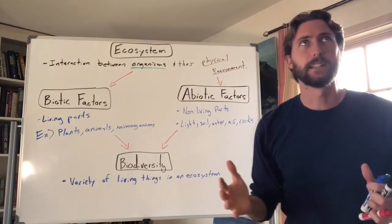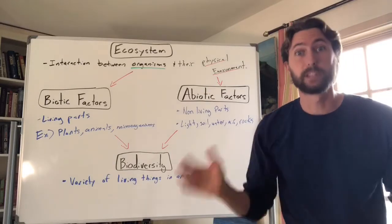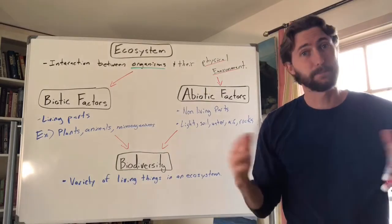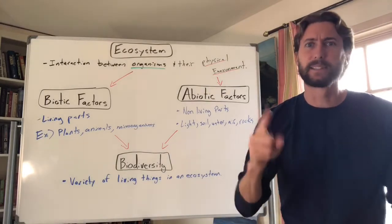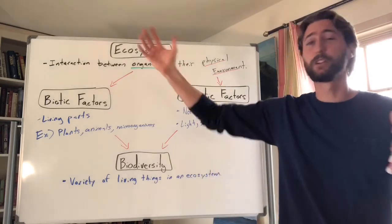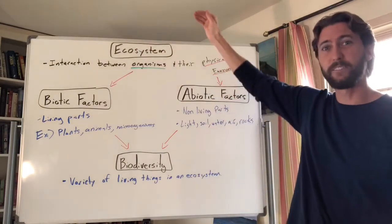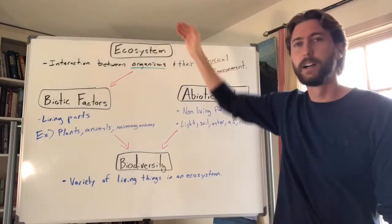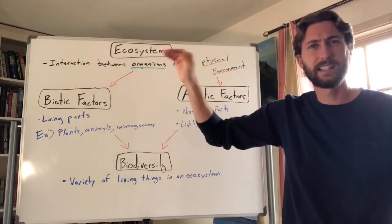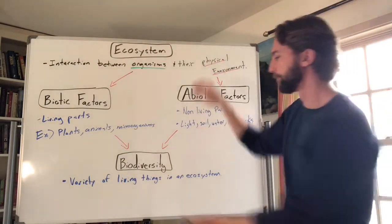Do populations grow forever? In 1950 there were about 2.5 billion people on Earth, but today there are 7.5 billion. Are we going to continue to grow that fast forever, or are we going to hit a limit? Let's talk about it.